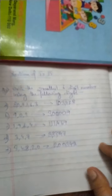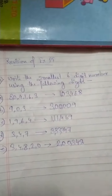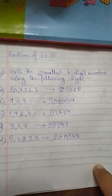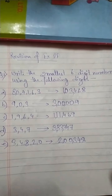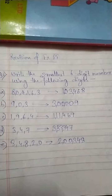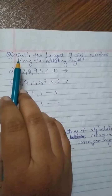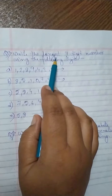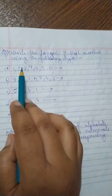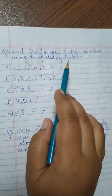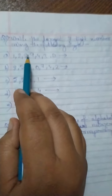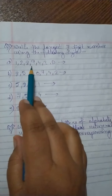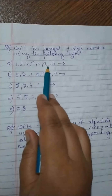I think making the smallest 6 digit number is clear to all. Now let us make the largest numbers. This is the second question: Write the largest 7 digit number using the following digits: 1, 2, 8, 9, 4, 3, 0.